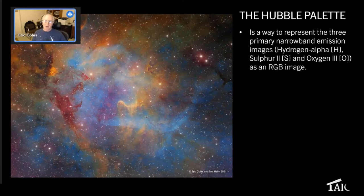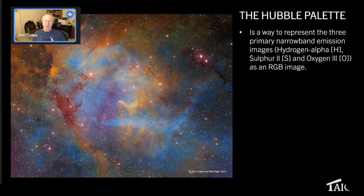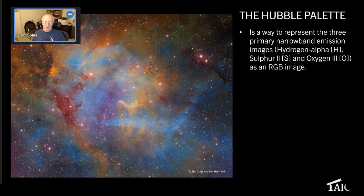The Hubble palette image is a way to present the three primary emissions that we collect: the hydrogen alpha, the sulfur, and oxygen. They are mapped to the RGB color palette — sulfur is R, hydrogen is G, and oxygen is B. There's often a question of why they're mapped that way. Well, in the first place, when you get done you get a really pretty image.